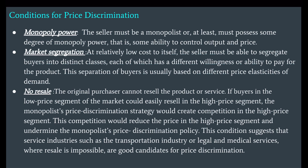Conditions for price discrimination. First, monopoly power: the seller must be a monopolist or at least possess some degree of monopoly power — some ability to control output and price. Second, market segregation: at relatively low cost, the seller must be able to segregate buyers into distinct classes, each with a different willingness or ability to pay, based on different price elasticities of demand. Third, no resale: the original purchaser cannot resell the product or service. This condition suggests that service industries such as transportation, legal, and medical services — where resale is impossible — are good candidates for price discrimination.